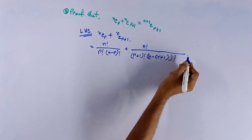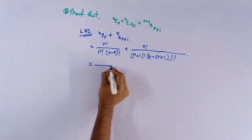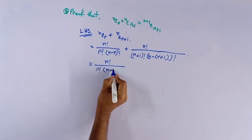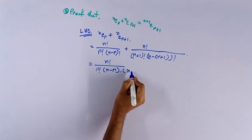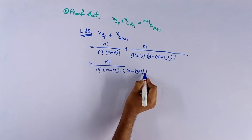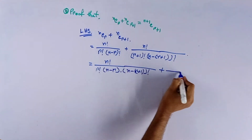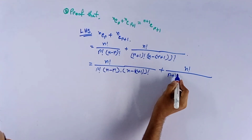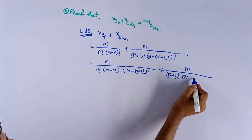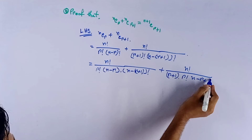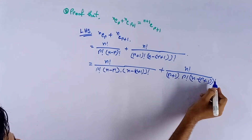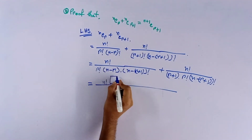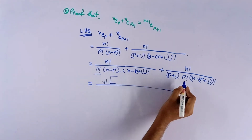That equals n factorial by r factorial times (n minus r) times (n minus r plus 1) whole factorial, plus n factorial by (r plus 1) times r factorial times (n minus r plus 1) whole factorial.